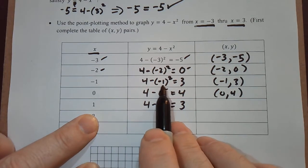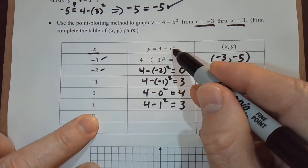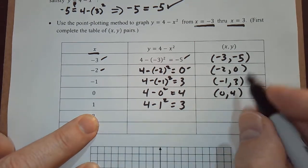We get the same value as we got with negative 1 because when you square negative 1 or 1, you get the same value. So 4 minus 1 is 3, so 1 comma 3.